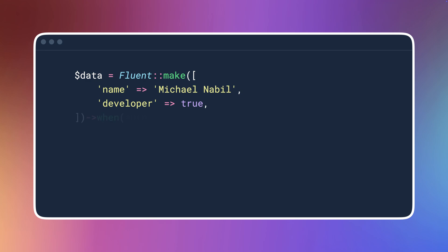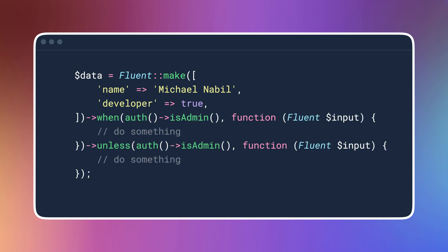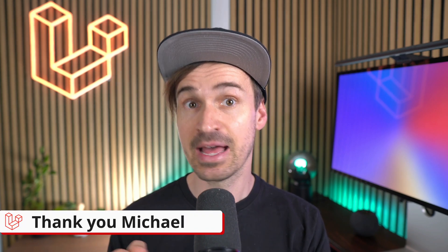First up we have the addition of the conditional trait to fluent objects. This is super helpful because now you can add conditional logic directly in your fluent chain without breaking the flow or making your code look messy. Thank you Michael!